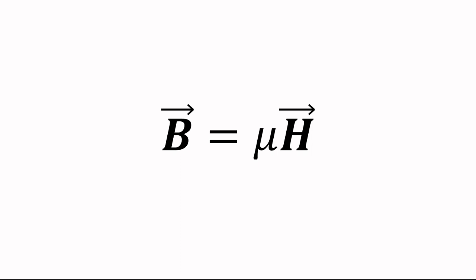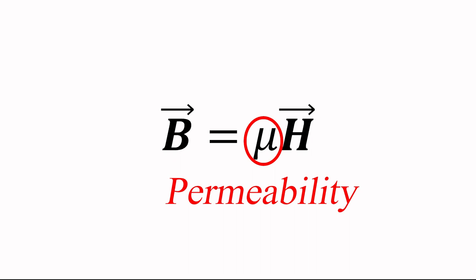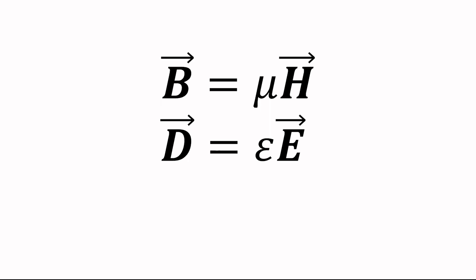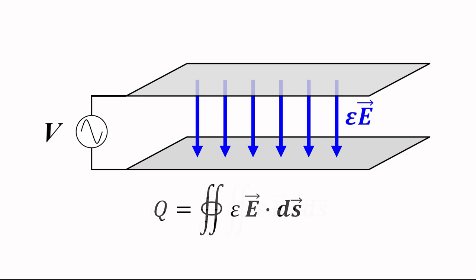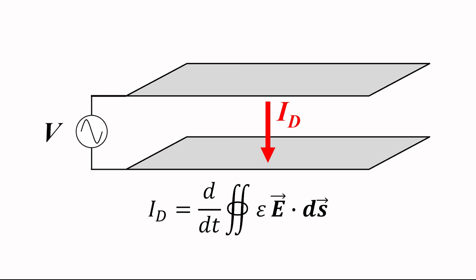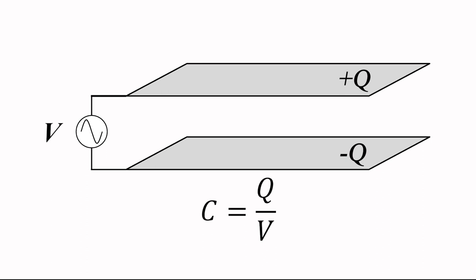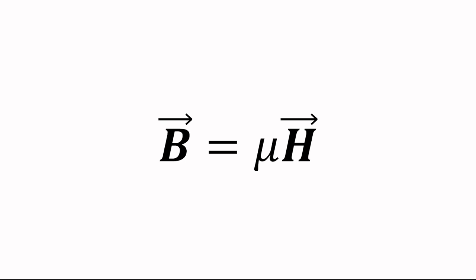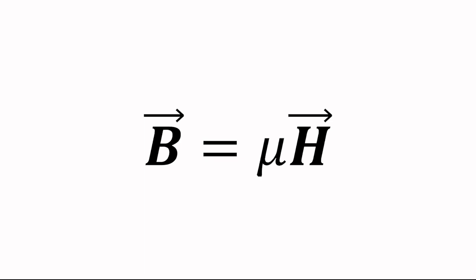The magnetic flux density B is equal to the magnetic field intensity H multiplied by a material property called the permeability, designated by the Greek letter mu. This relationship between B and H is analogous to the relationship between electric flux density and electric field, which are related by the permittivity of the material. The permittivity determines the available charge that can form a displacement current in a given electric field — equivalent to saying that capacitance determines the available charge for a given potential. Similarly, the permeability determines the available magnetic flux from a given magnetic field that can cause electromagnetic induction. This is the very point of Faraday's law, which we will discuss presently.